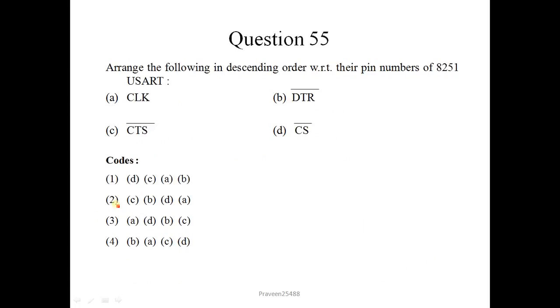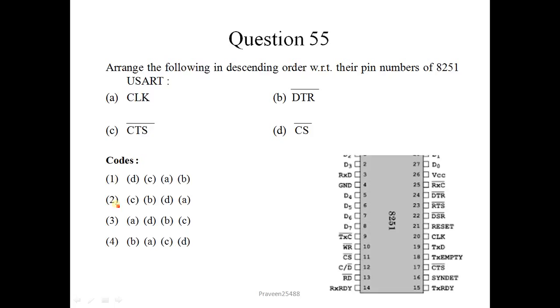Next question is arrange the following in ascending order with respect to their pin numbers of 8251 USART. USART stands for Universal Synchronous Asynchronous Receiver Transmitter. I will show the pin diagram of 8251. Here you will see that pin number for clock is 20, pin number for DTR bar is 24, for CTS bar is 17, and for CS chip select signal is 11. So their descending order is 4, BACD.